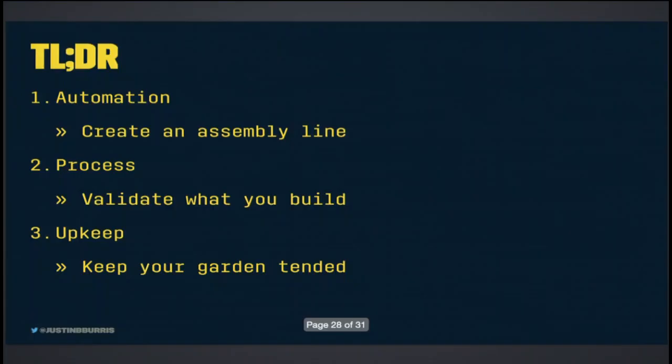TLDR: if you take only one thing from each of these points — if you're going to automate, create an assembly line; if you're going to keep a process, validate what you build; and finally, always keep that garden tended.